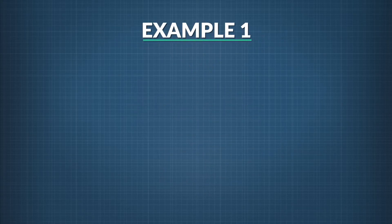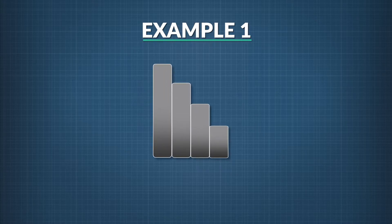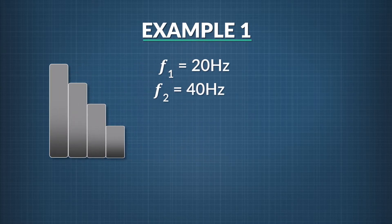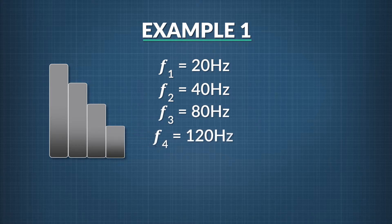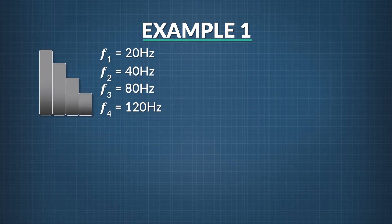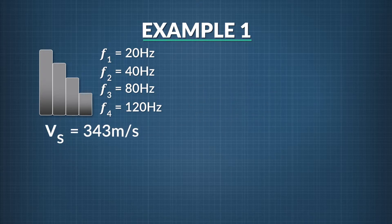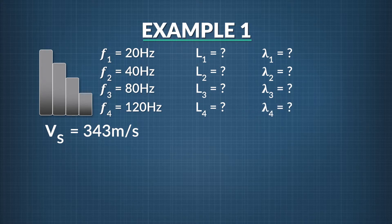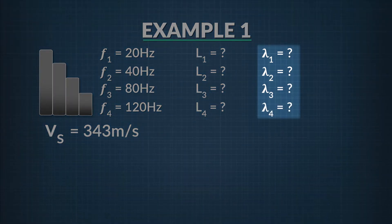Let's look at an example of a standing wave system where both ends are closed. You decide to make an instrument closed at both ends capable of playing four notes with four different pipes: one at 20 hertz, one at 40 hertz, one at 80 hertz, and a note at 120 hertz. The speed of sound in air is 343 meters per second. How long do the four pipes need to be, and what are the wavelengths of these notes — lambda 1, lambda 2, lambda 3, and lambda 4?